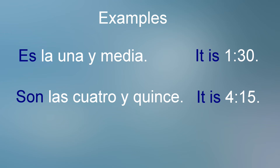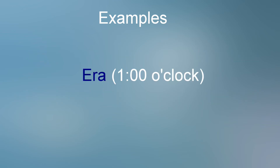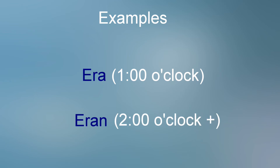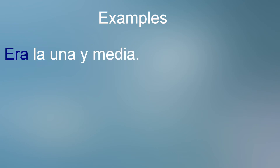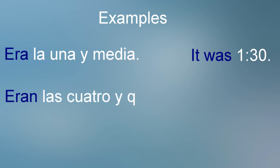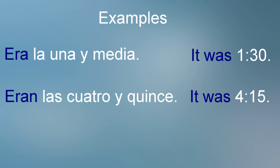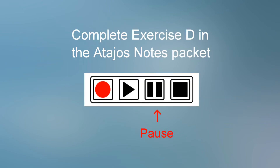To express these hours in the past, the concept is just the same — just use ERA for one o'clock, and ERAN for two o'clock and higher. ERA la una y media means 'it was 1:30,' and ERAN las cuatro y quince means 'it was 4:15.' Exercise D in your Atahos notes packet will help you practice telling time in the past.